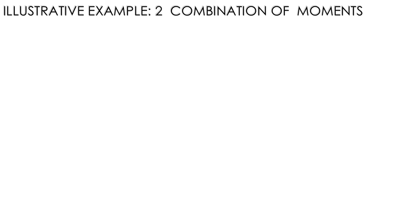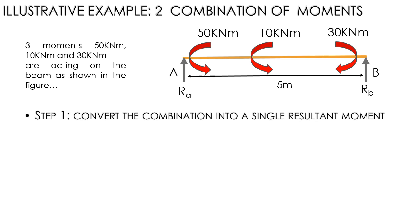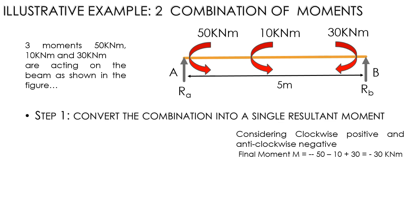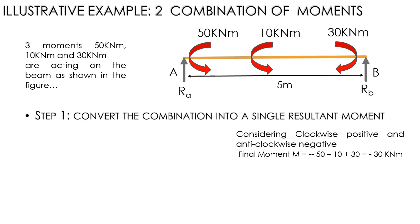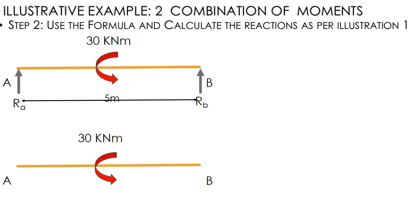What if the loading is a combination of more than one moment? Here we have: 50 kNm anti-clockwise, 10 kNm anti-clockwise, and 30 kNm clockwise. Step one: convert to a single resultant moment. Using sign convention — anti-clockwise negative, clockwise positive — we get: −50 − 10 + 30 = −30 kNm. The negative sign implies the resultant is in the anti-clockwise direction.